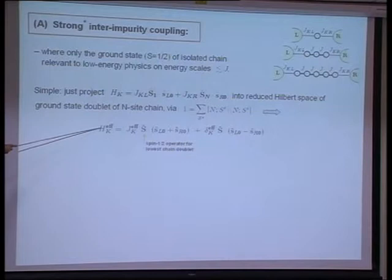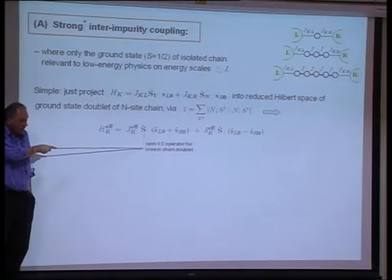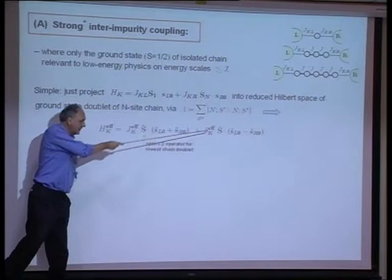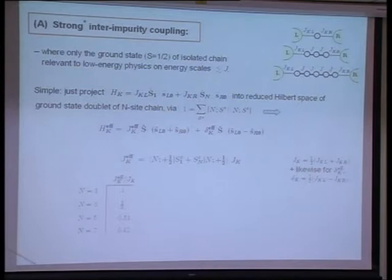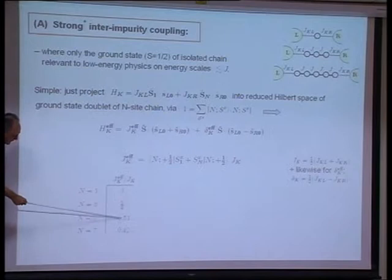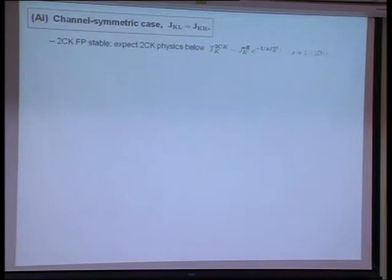In that case, one simply needs to take the Kondo part of the Hamiltonian and project it into the reduced Hilbert space of the ground state doublet of the inside chain. When you do that, you get an effective two-channel Kondo model where the operator S-hat is a spin-one-half operator for the lowest chain doublet. The effective exchange couplings and likewise effective anisotropies are given by the bare JK times a matrix element reflecting the Z components of the end spins in the ground state doublet of the chain.